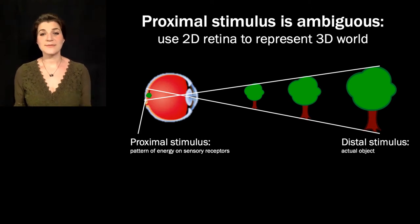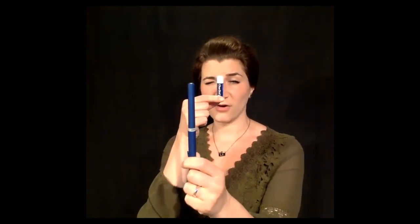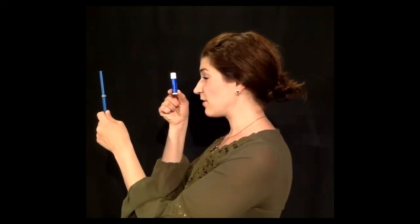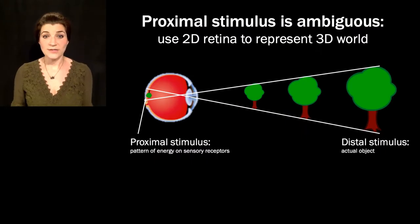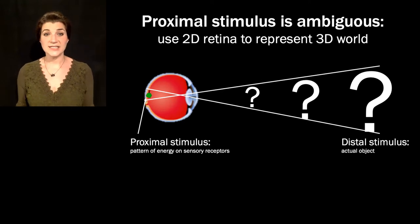We've got a two-dimensional retina, and we need to represent a three-dimensional world, so any proximal image could be caused by a number of different distal stimuli. Let's demonstrate this with our two objects: close one eye and move the small object closer to you and the large object farther away until they're taking up the same amount of the visual field. They're both tickling the same number of photoreceptors. So how do we know that one is big and far away and the other is little and closer up?